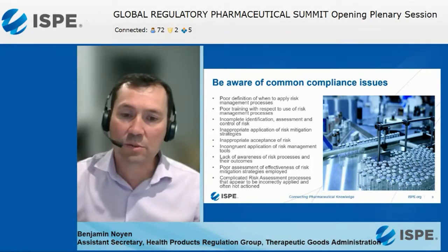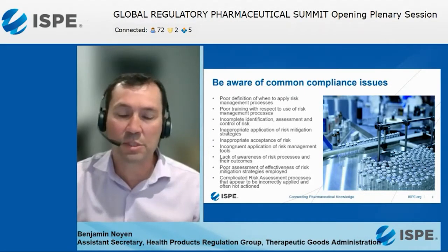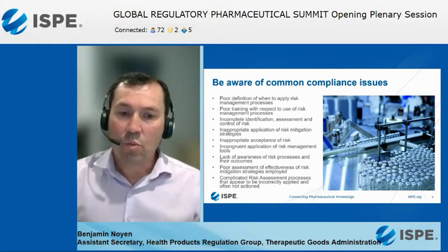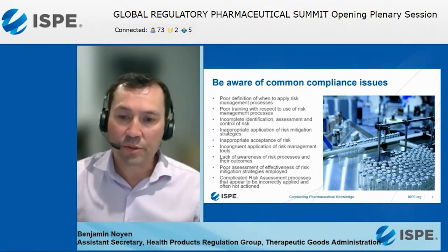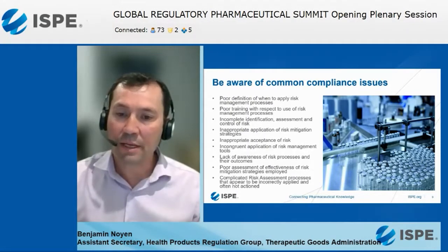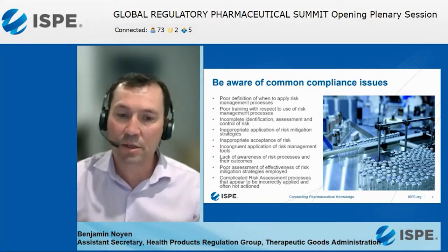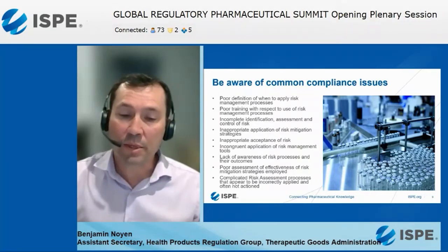Inspectors will assess what risk mitigations the manufacturer has for a specific risk and whether mitigation strategies are appropriate or sufficient. They will look for inappropriate acceptance of risk by focusing on an issue or example to see what controls and mitigations were implemented.